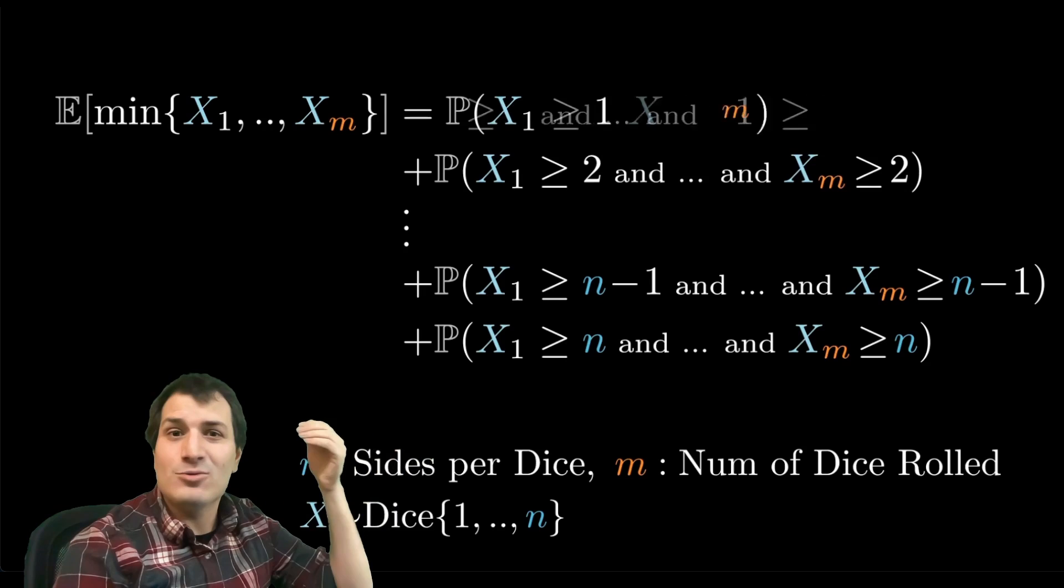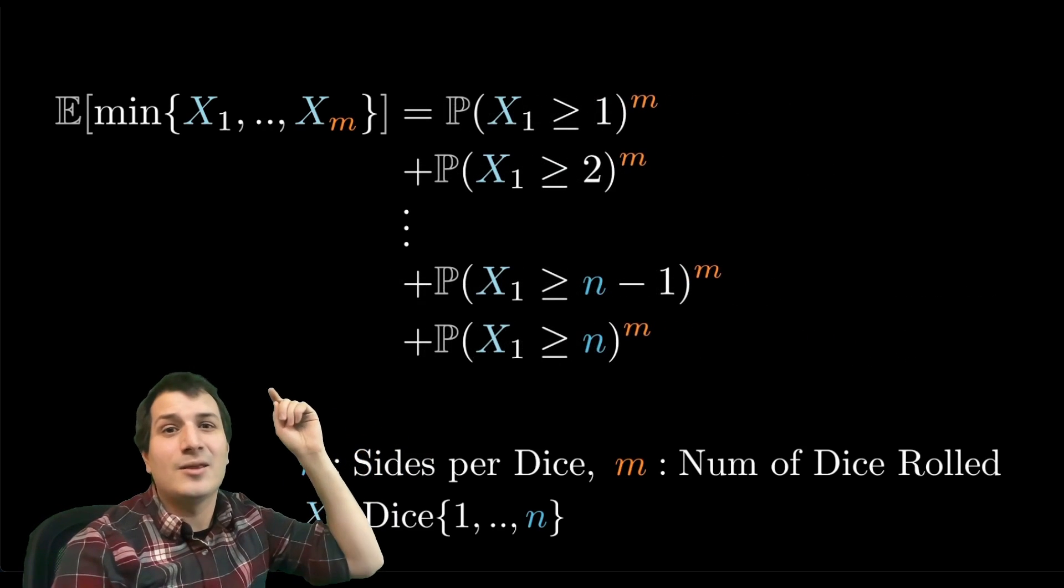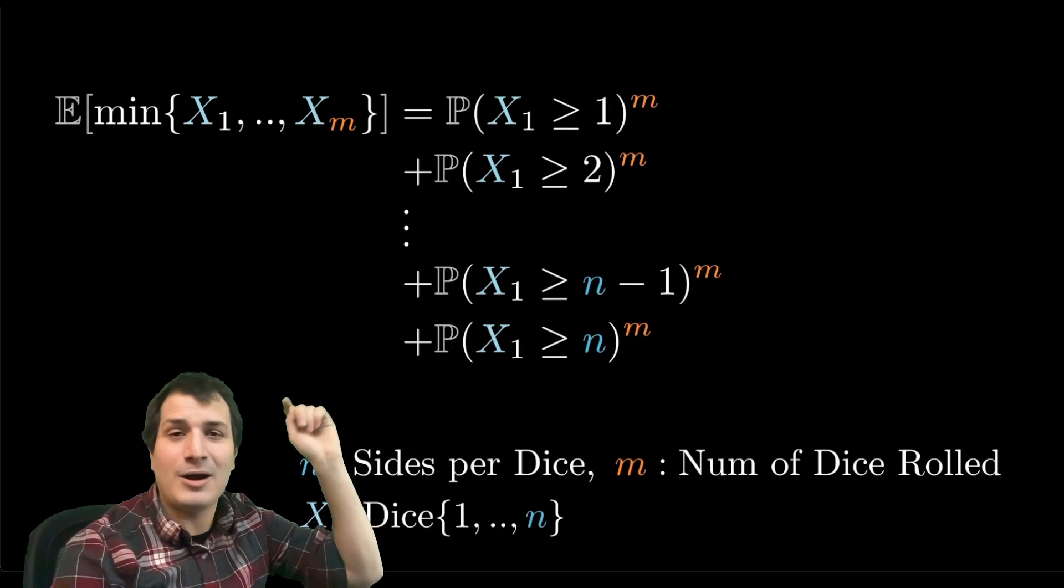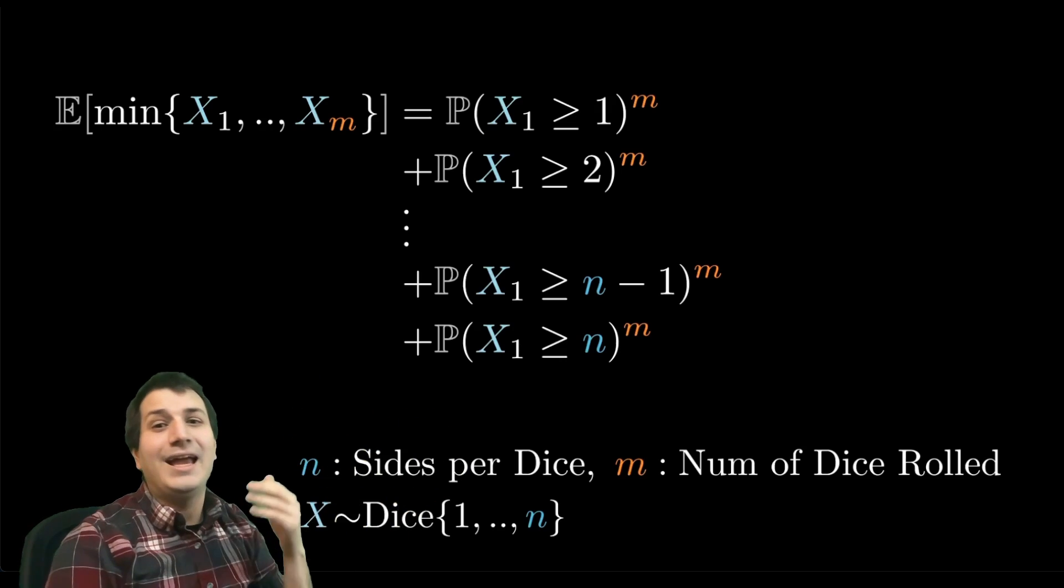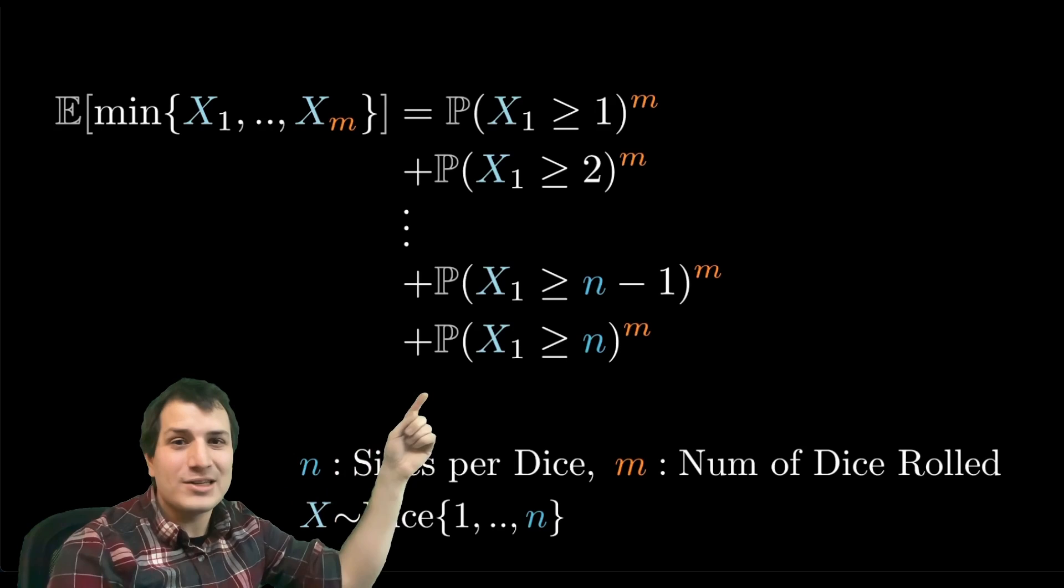You end up with this nice sequence of probabilities: the probability x1 is bigger than 1 to the power m, it's bigger than 2 to the power m, all the way up to it's bigger than n to the power m.